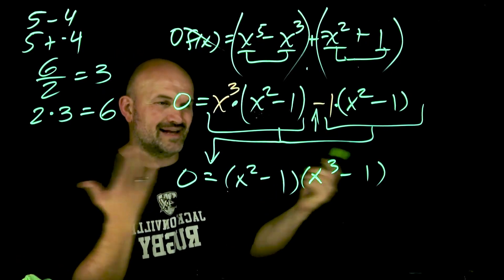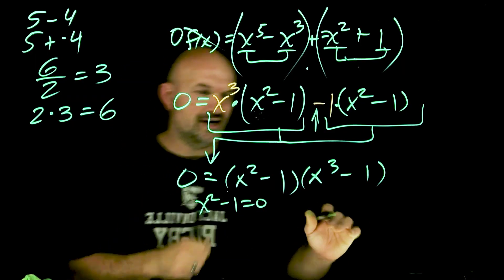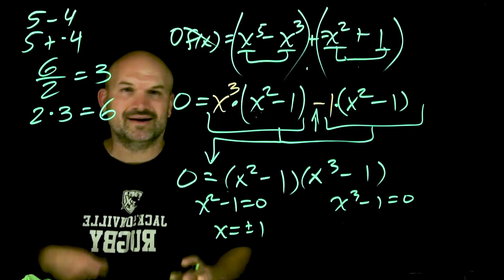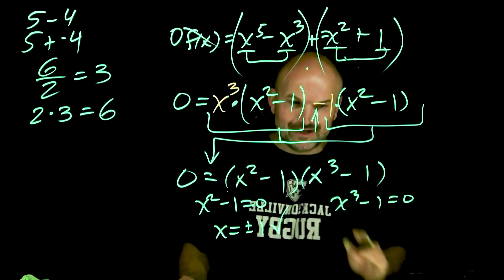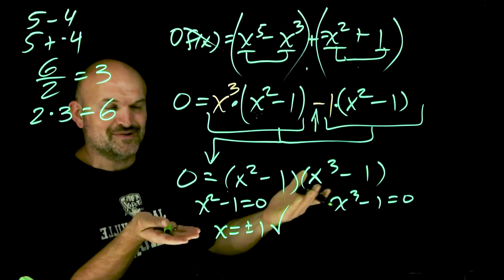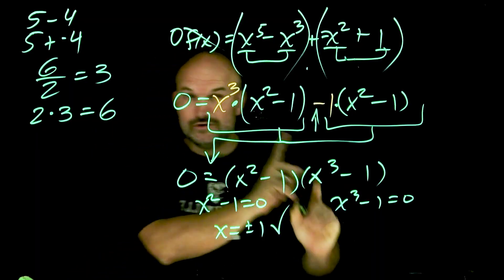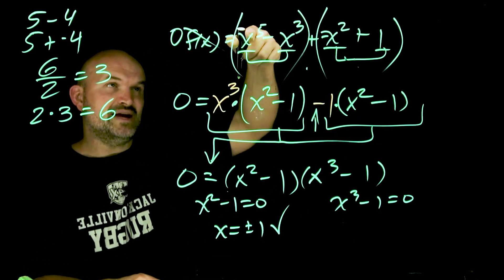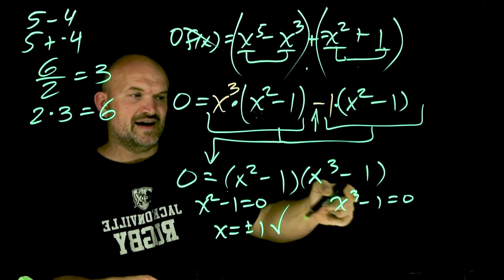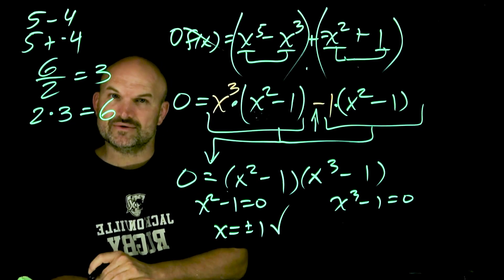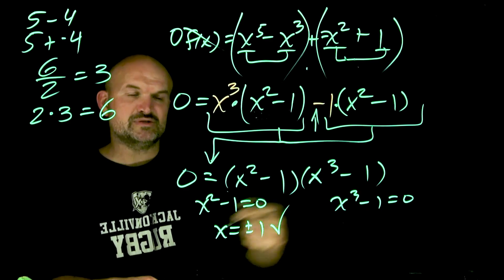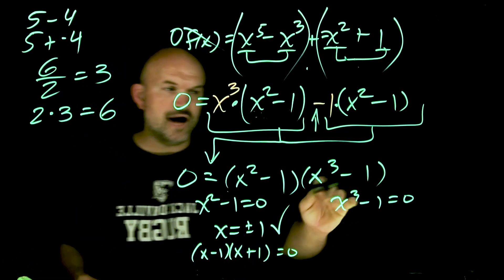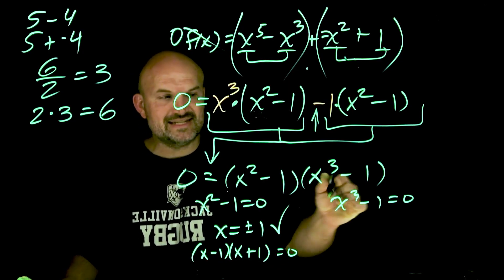Now we have a product equal to zero. A lot of students say, 'I'll set x² - 1 = 0 and x³ - 1 = 0.' For x² - 1 = 0: add 1, take the square root, x = ±1 — and that's correct. For x³ - 1 = 0: if you add 1 and take the cube root you get x = 1, which is a valid zero. But we have a degree-5 polynomial, so there should be five zeros. That's only three zeros so far. There's no cube root method — we need to factor. We can rewrite x² - 1 as (x - 1)(x + 1), giving us two solutions.